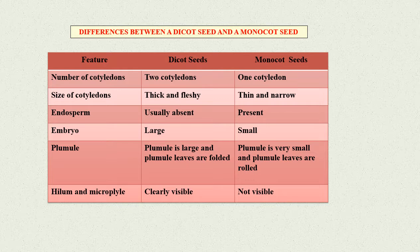Plumule: In dicot seeds, it is large and plumule leaves are folded. In monocot seeds, it is very small and plumule leaves are rolled.